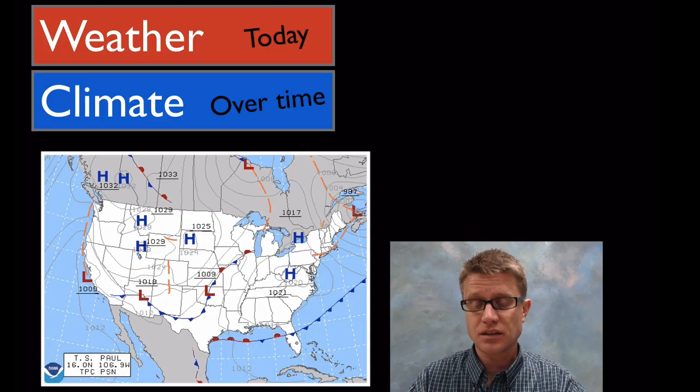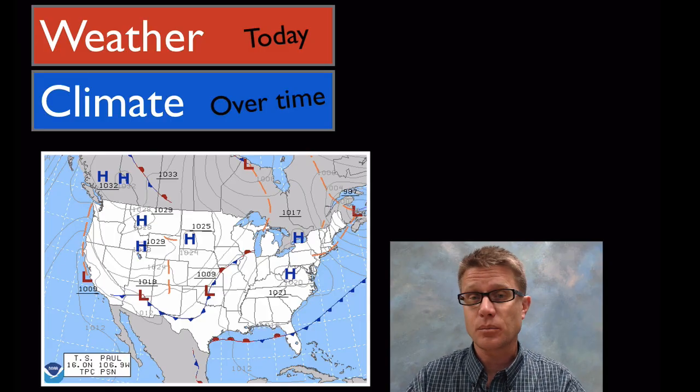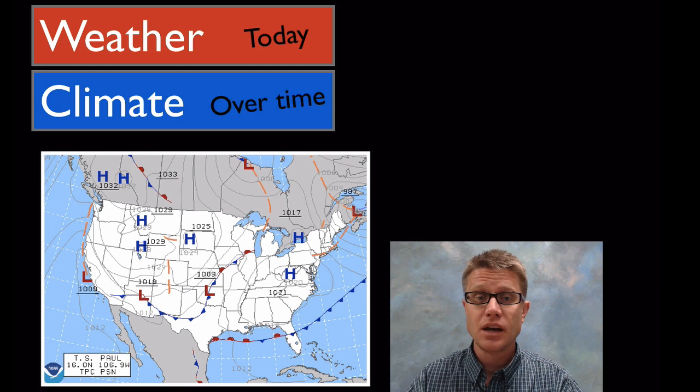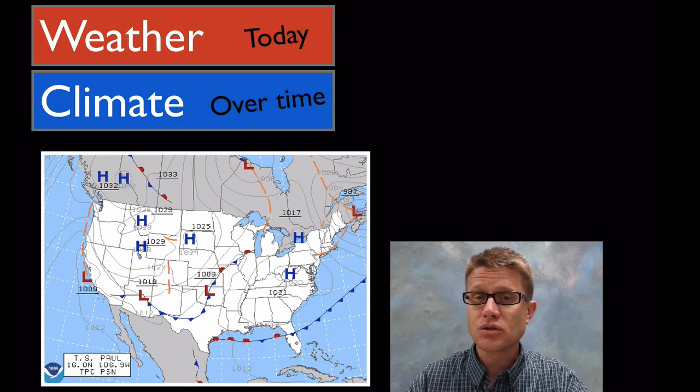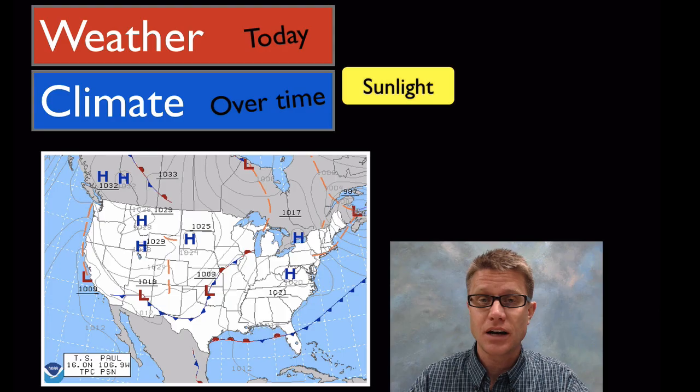Climate is what it looks like over a long period of time. They're both measuring the same thing—things like temperature, precipitation, wind—but it's really time scale. Weather is what it looks like right now; climate is over time.